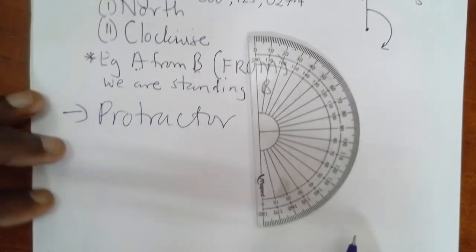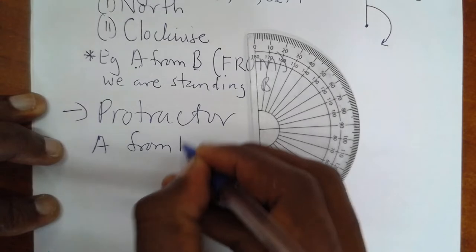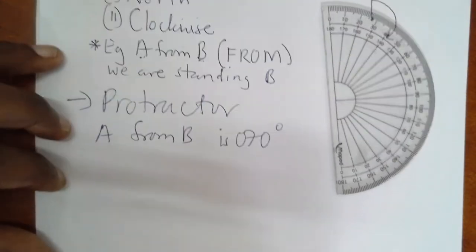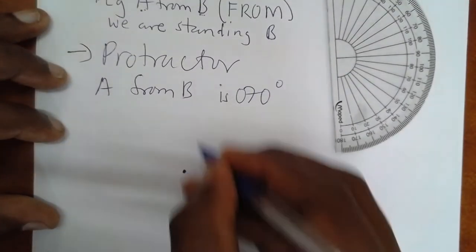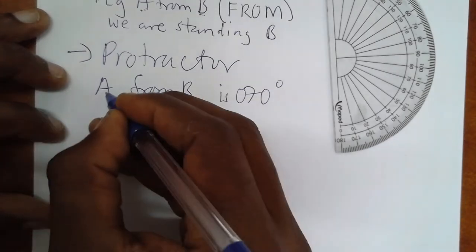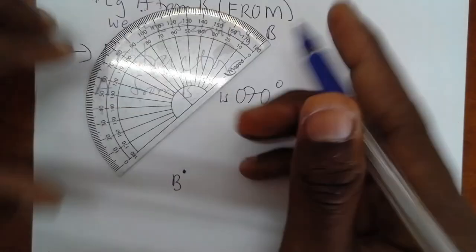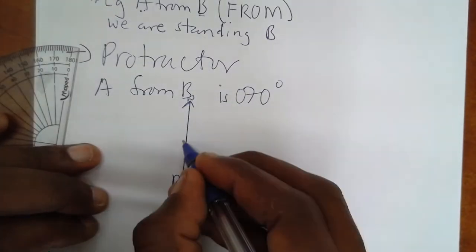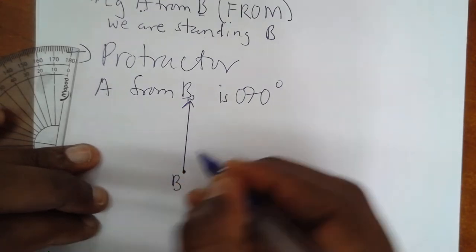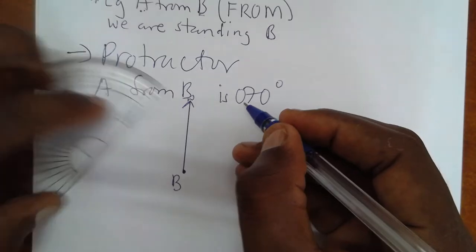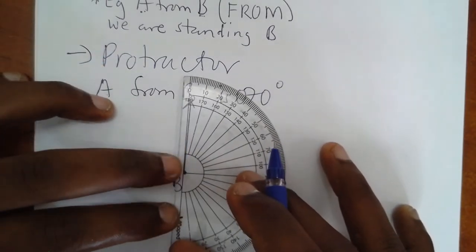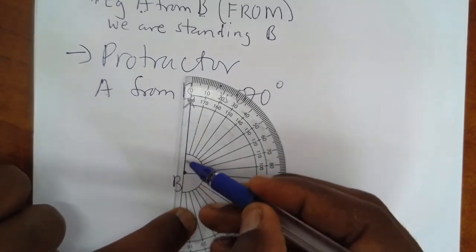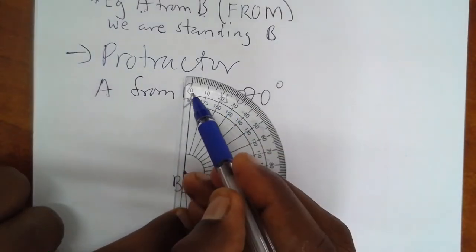For example, we said A from B is 70 degrees bearing. So this means start at position B because A from B. Then keep your north. Keep your north. Then you have to find the angle from north going clockwise. That is 70 degrees. How shall we do it? We shall keep our protractor like that.